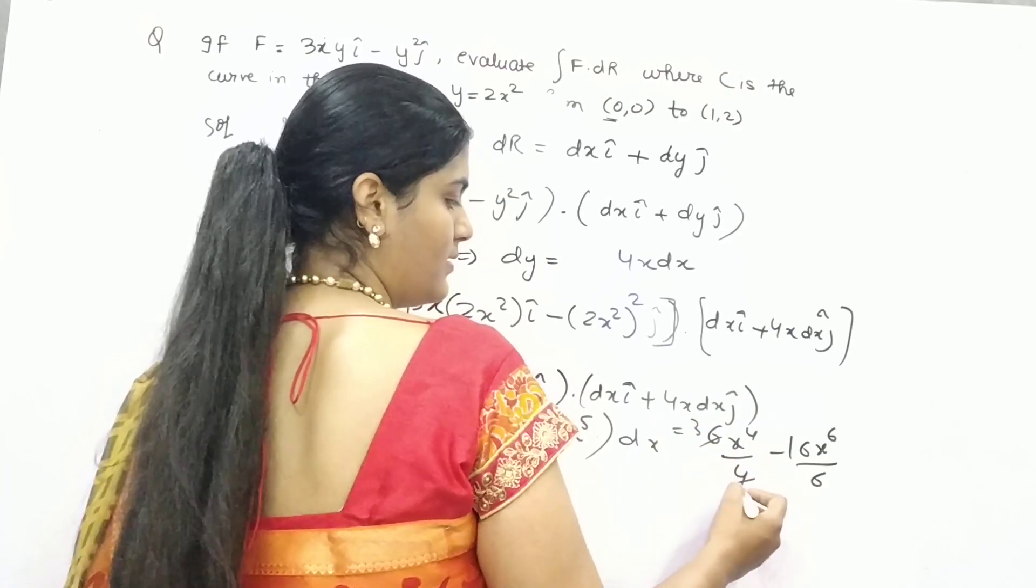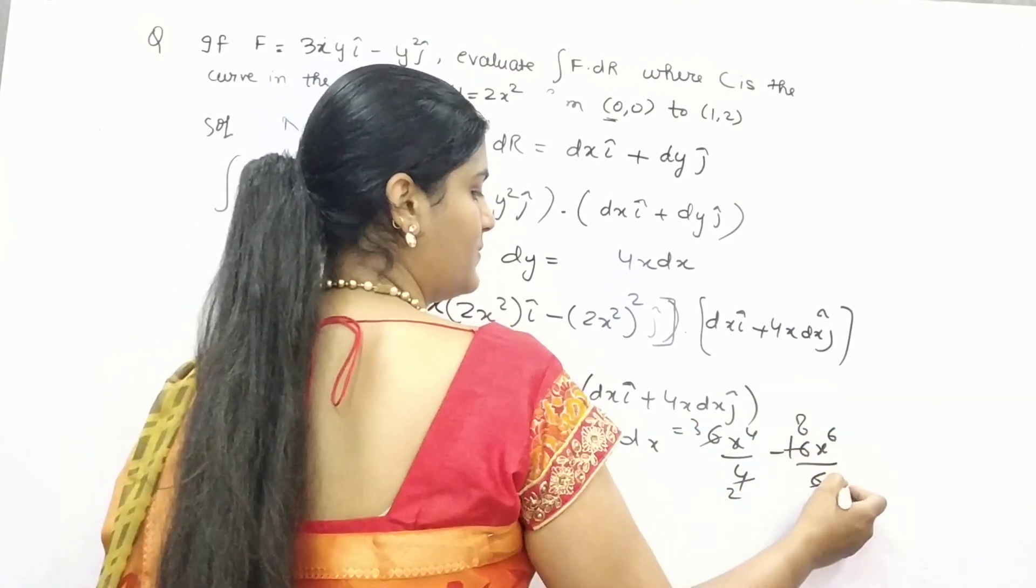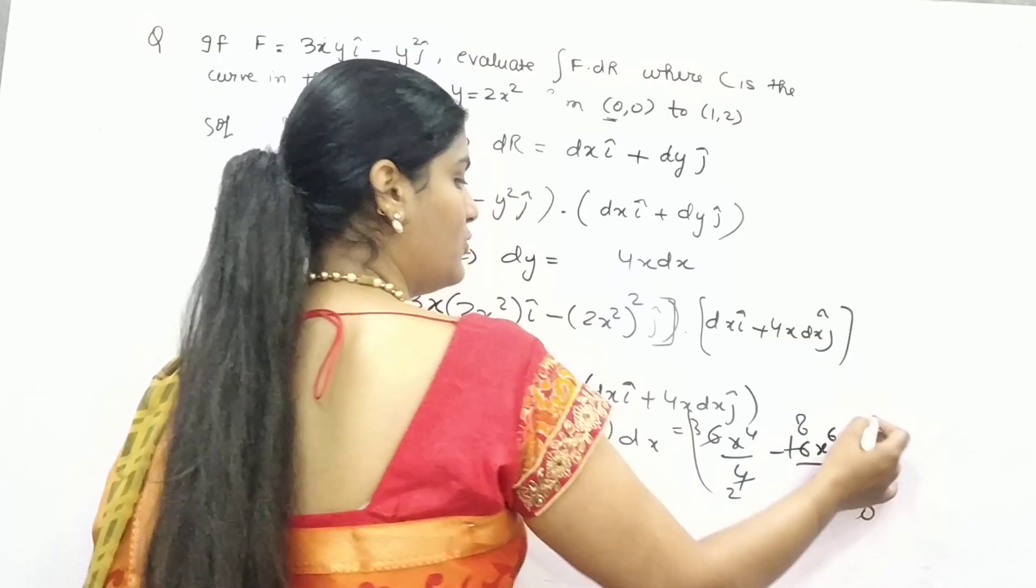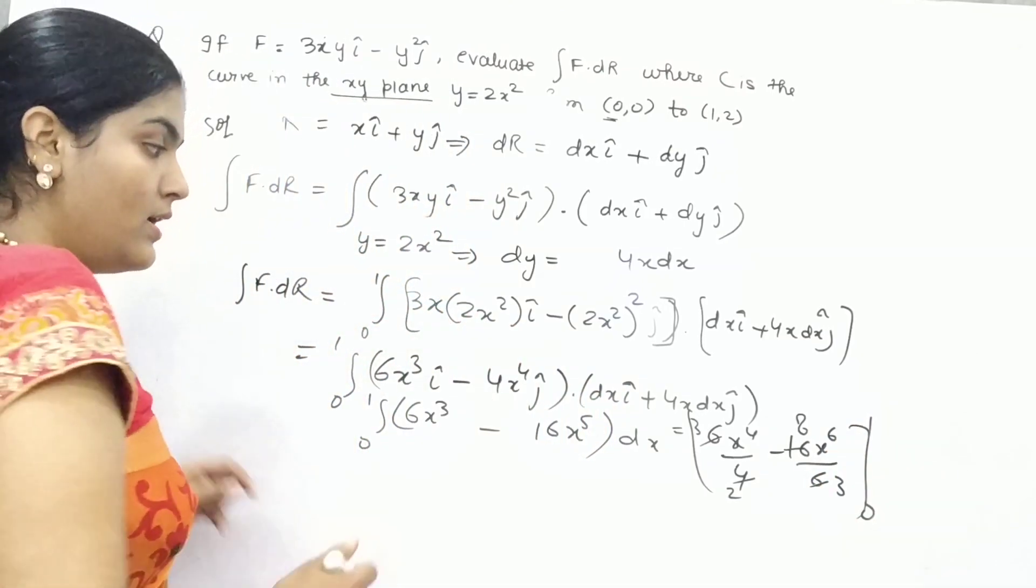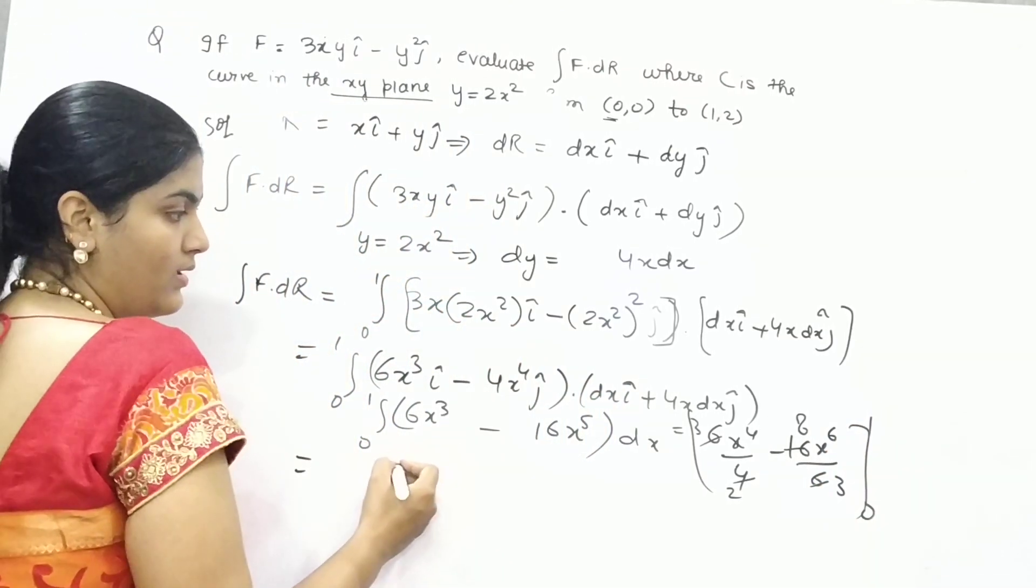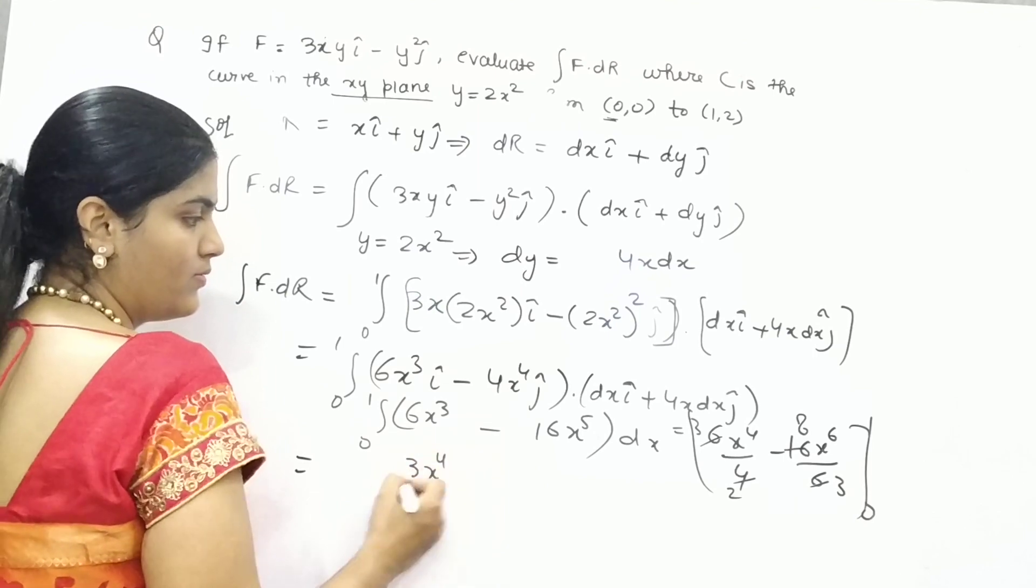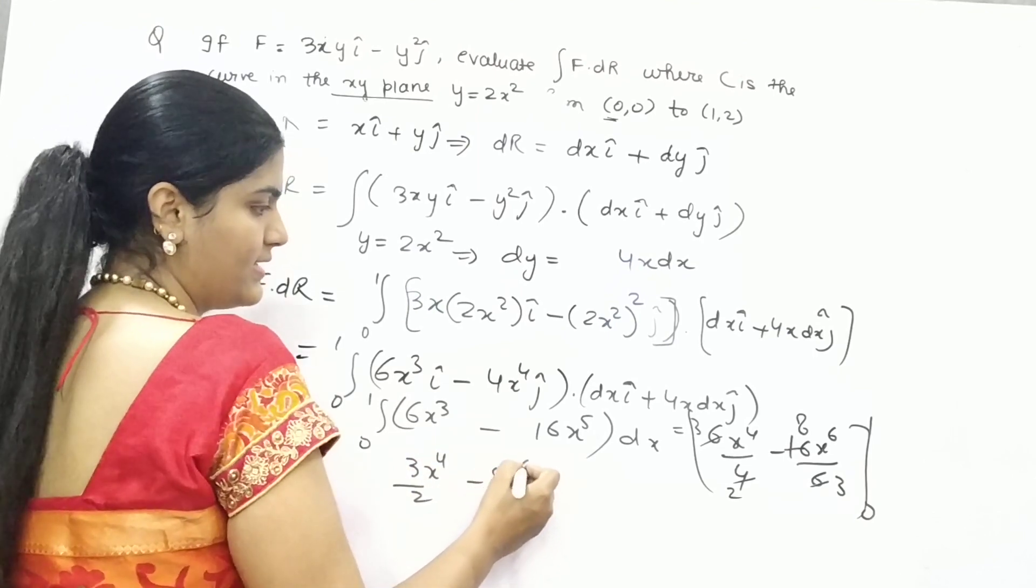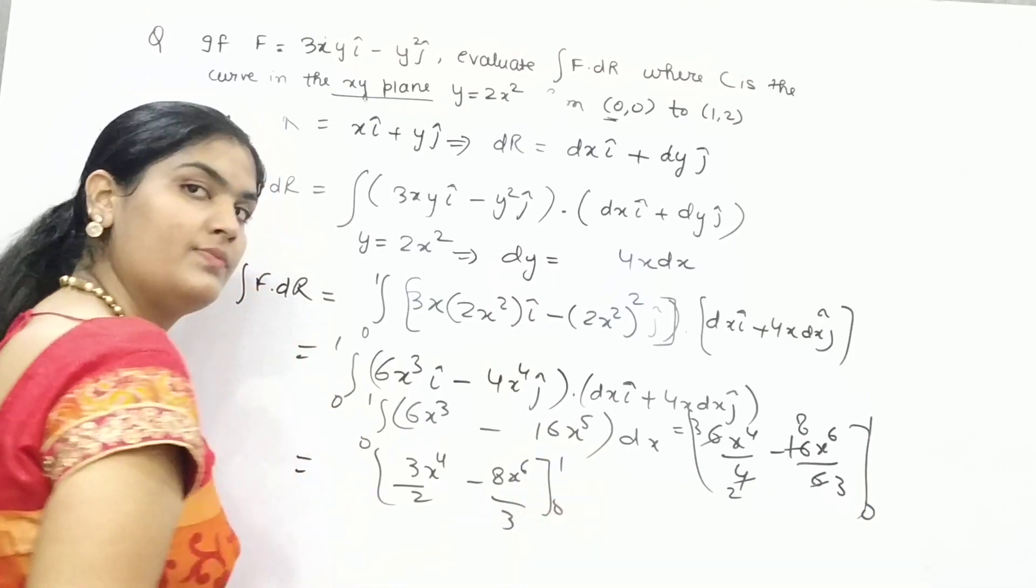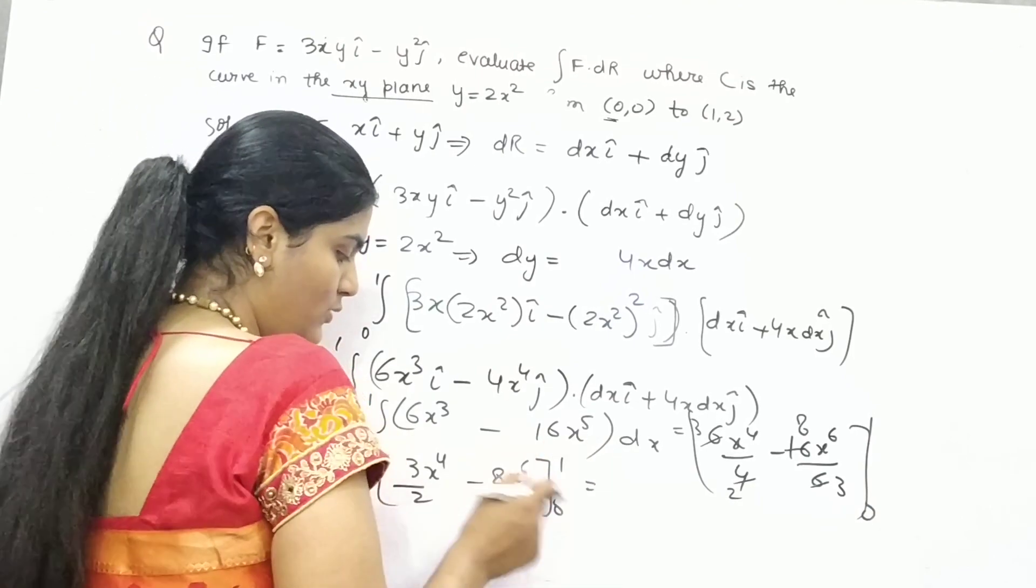2 times 3 is 2 times 2, 2 times 8, 2 times 3. Limit 0 to 1. So 3x to power 4 by 3. Apply limit, upper limit minus lower.